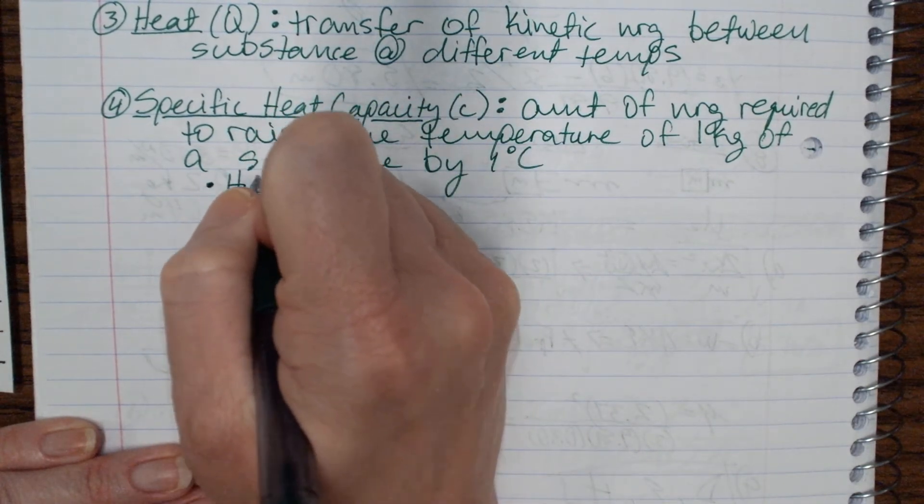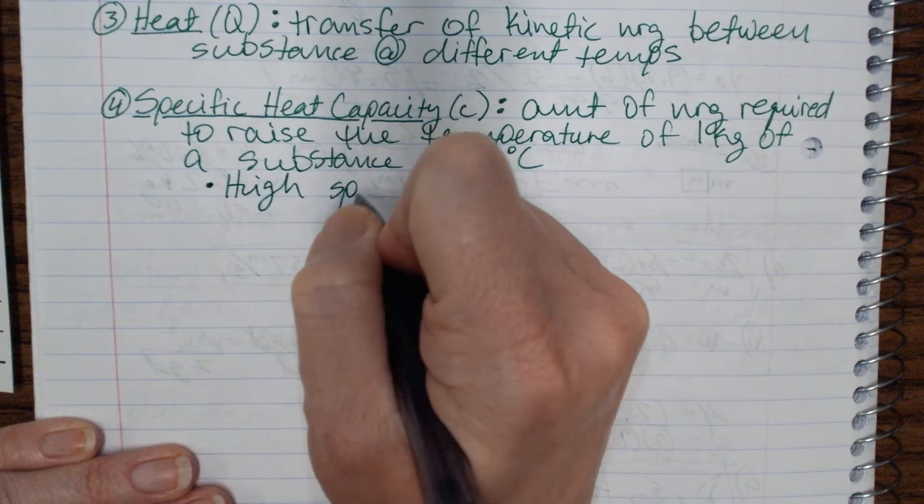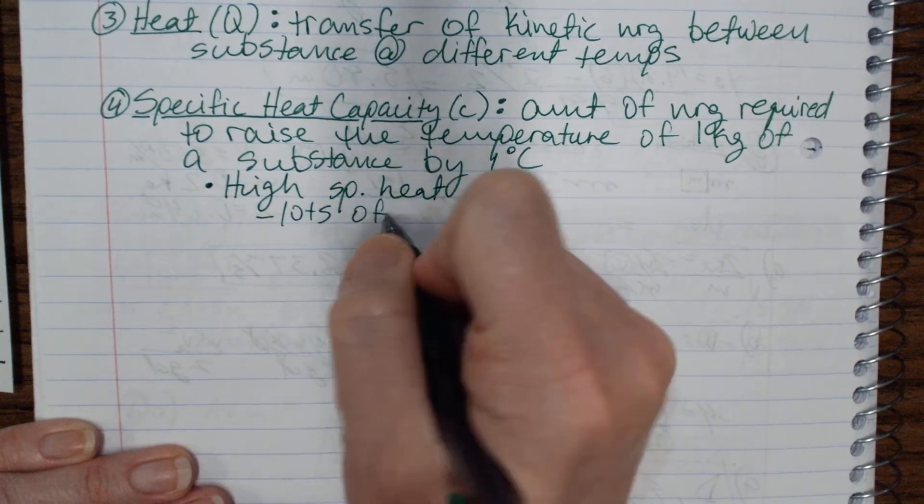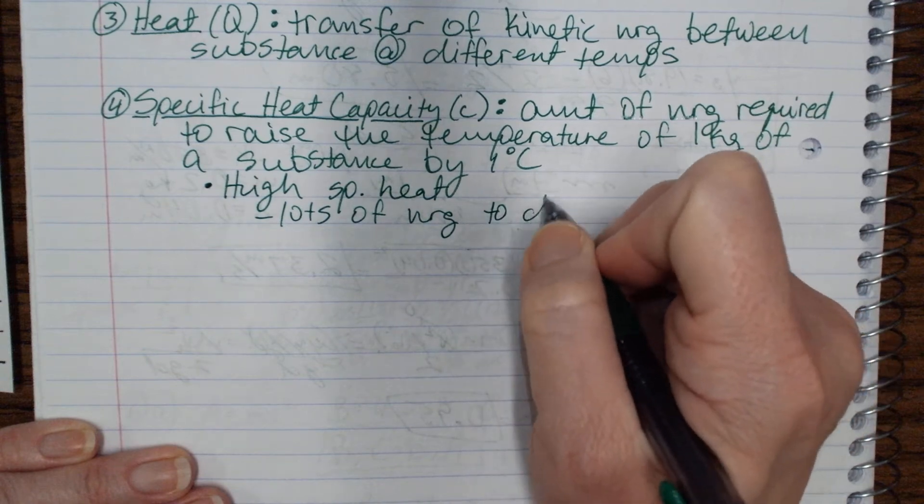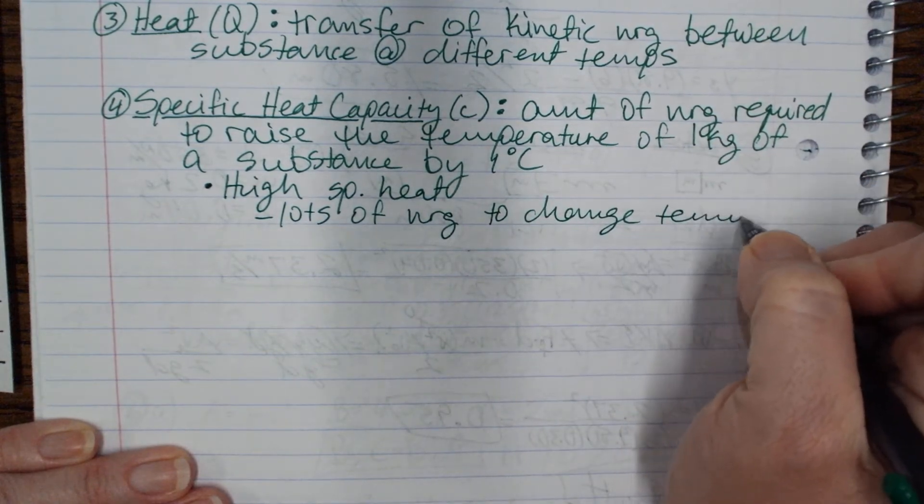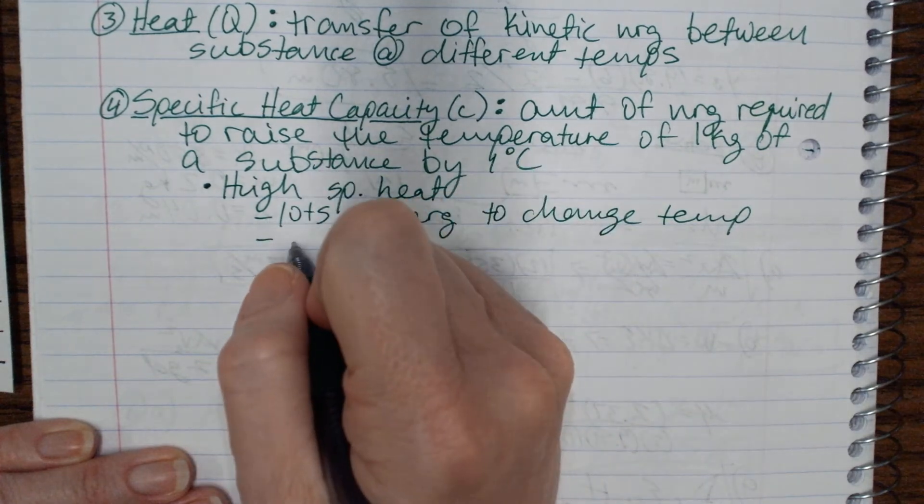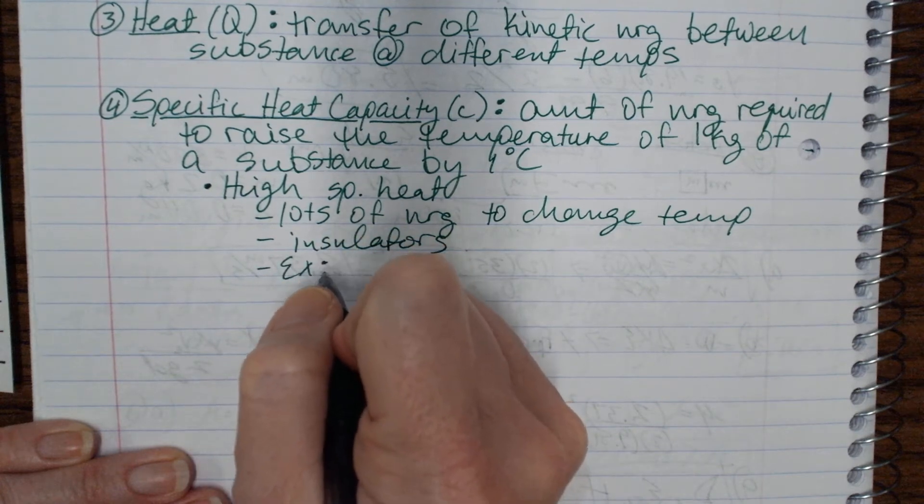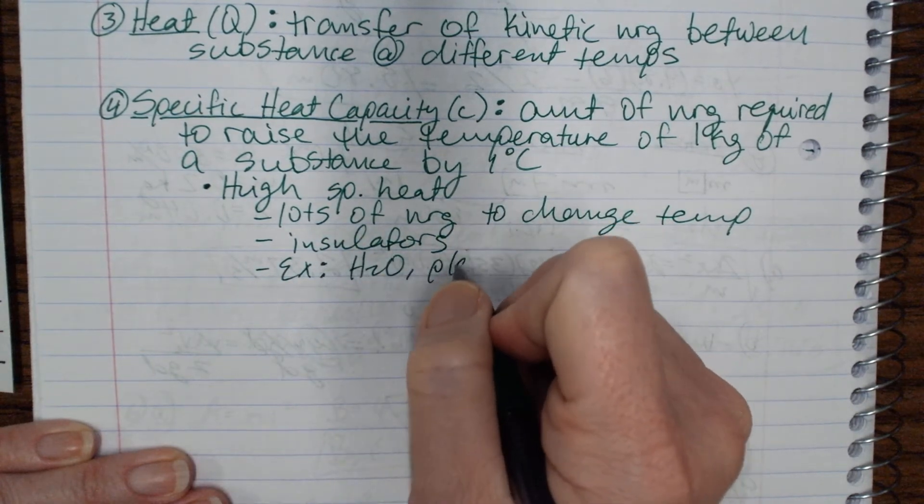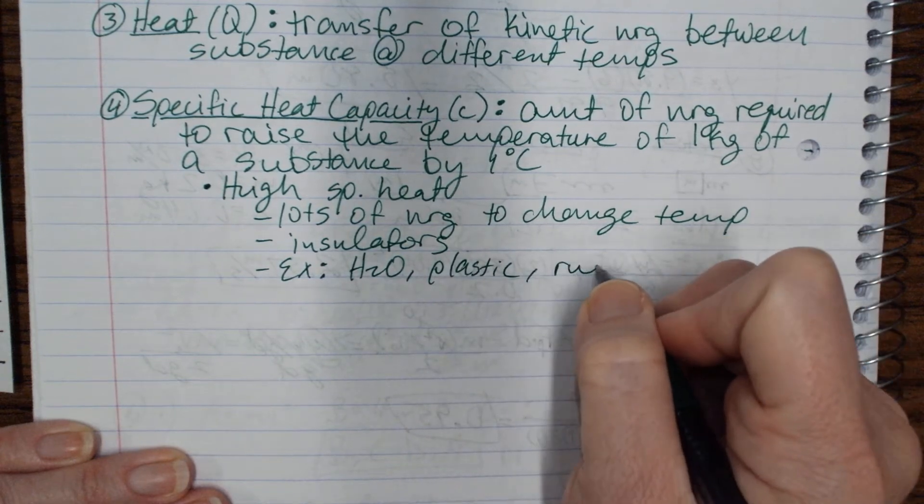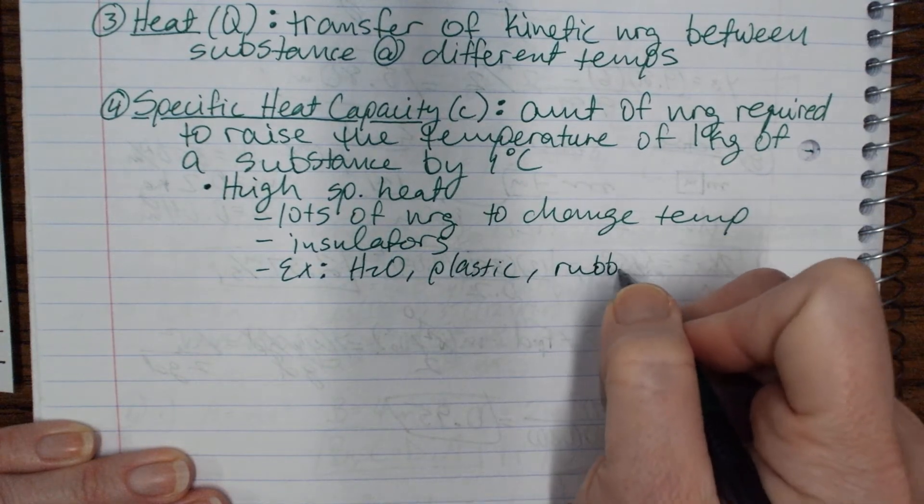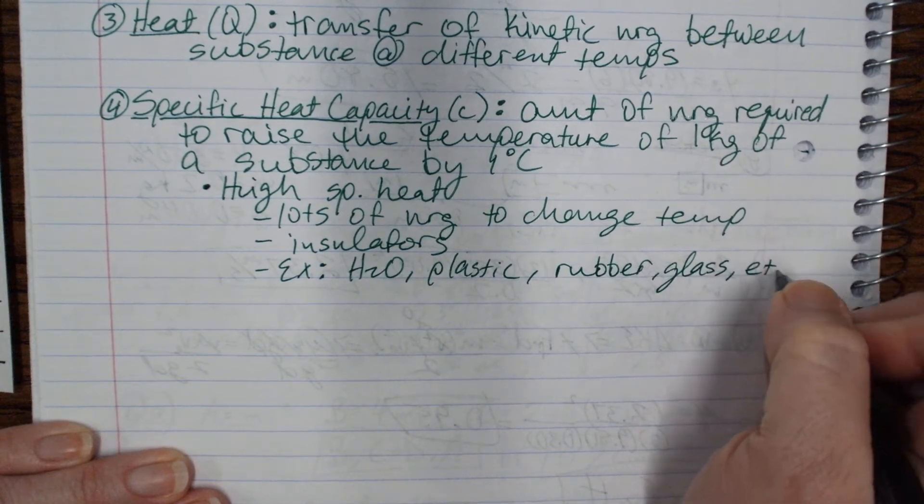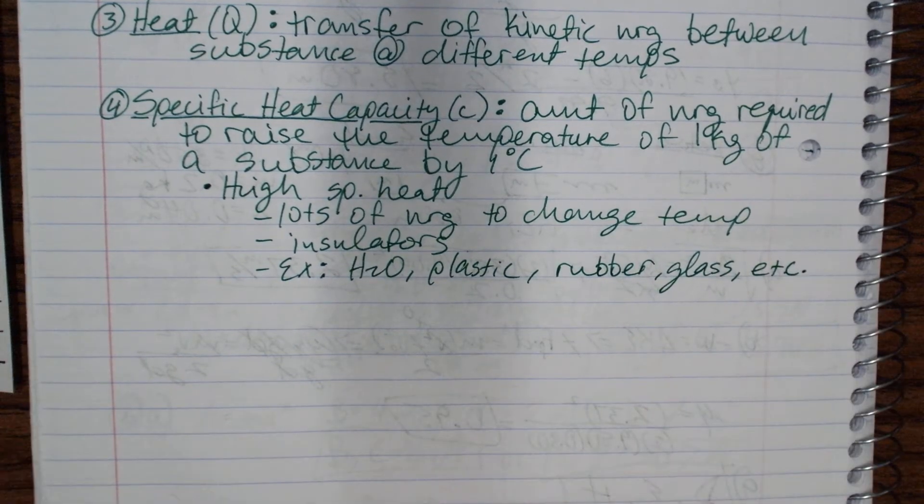So if you have high specific heat, that means it requires lots of energy to change the temperature. So high specific heat things are considered insulators. And examples of insulators would be water, plastic, rubber, glass. There's lots of them, but you get that.